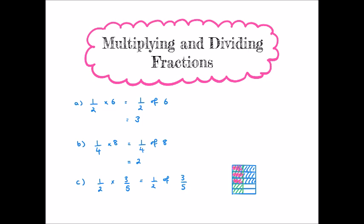We see that on the overlap of our two fractions we have three sections, but this is now out of a total of ten. So three-tenths of the shape is equal to a half times three-fifths. The denominator is the total number of pieces, found by multiplying two by five — the width by the height — giving ten. And the numerator is one times three, which is three — the same as multiplying the numerators.